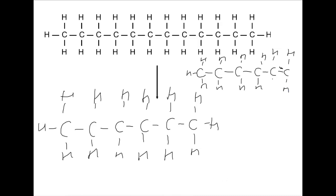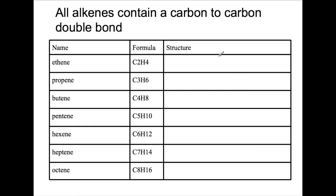Much like the alkane family, we can name and use the formulas of the different alkenes to draw their structures. Ethene is the smallest alkene. All alkenes have to have a carbon to carbon double bond. Therefore, you have to have at least two carbons to have an alkene.